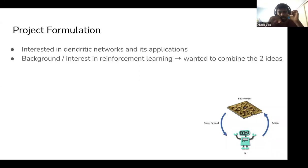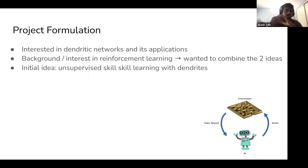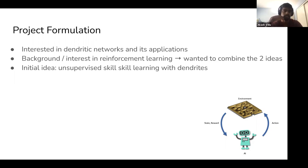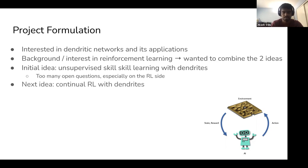My research before Numenta was more focused on reinforcement learning, which I'm really interested in. I was curious how these two ideas could be combined. My initial ideas were vaguely around having an agent learn specific higher-level skills in an unsupervised way using dendrites. After reflecting, this was kind of vague and there were a lot of open questions on the RL side.